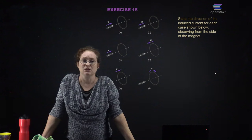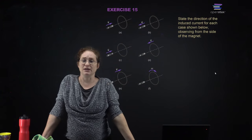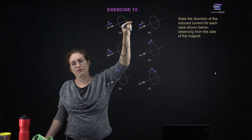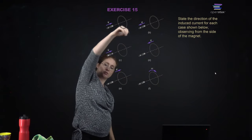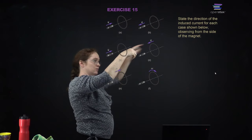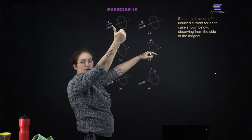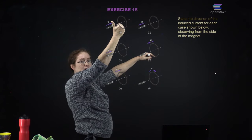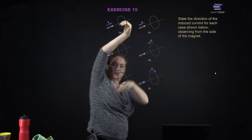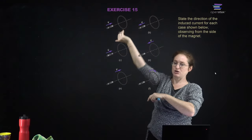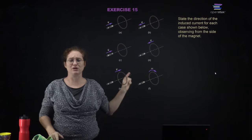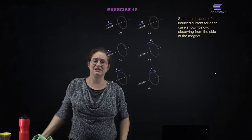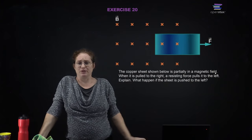Find the direction of the induced current in all cases. Here the magnetic field is pointing towards you and I'm increasing the magnetic flux through that wire, so I'm going to create the current so that the magnetic flux goes in the opposite direction. These are really tricky when using a mirror image, so I'm not going to do too many of them.